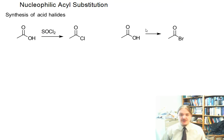The reagent for converting carboxylic acids into the acid bromide is phosphorus tribromide, which shouldn't surprise you because we use this reagent on alcohols as well.